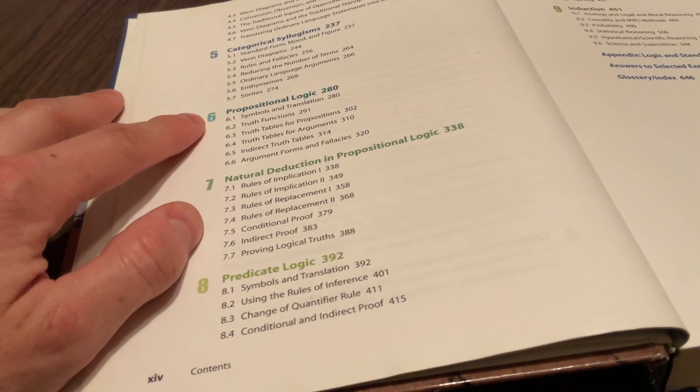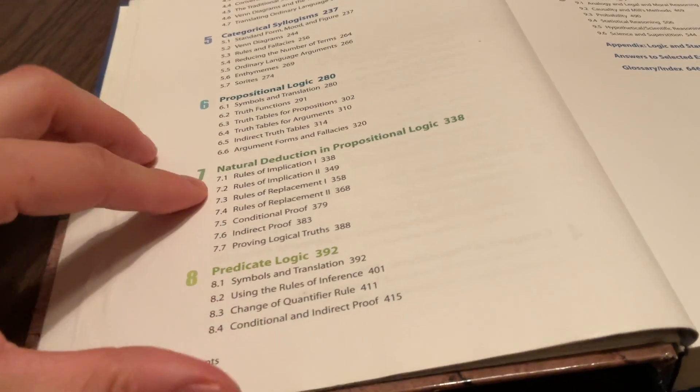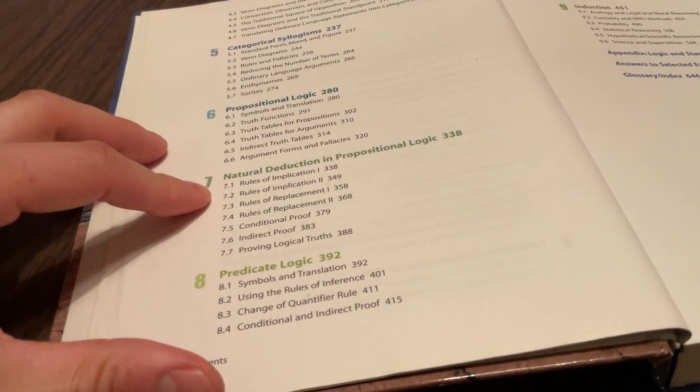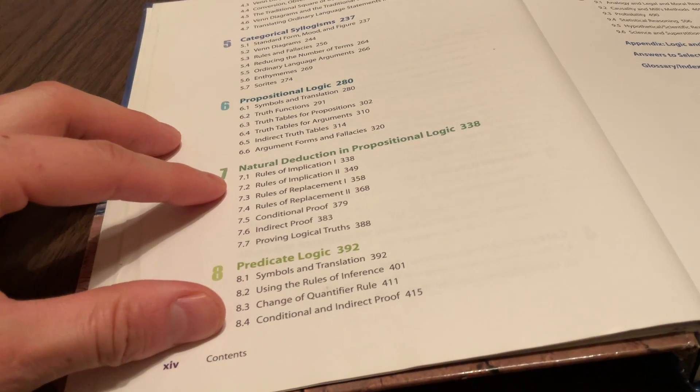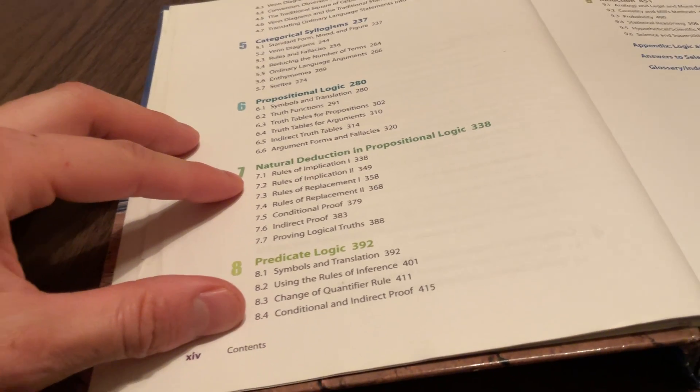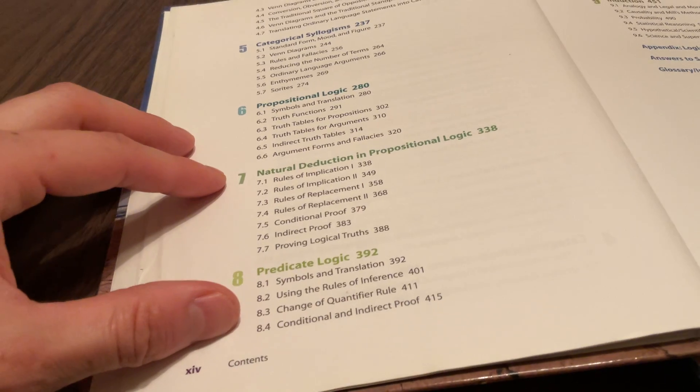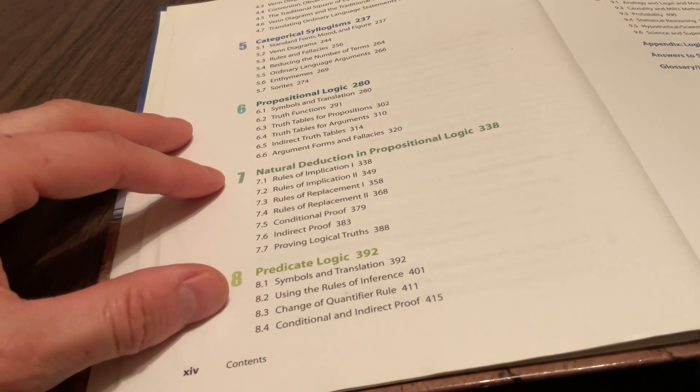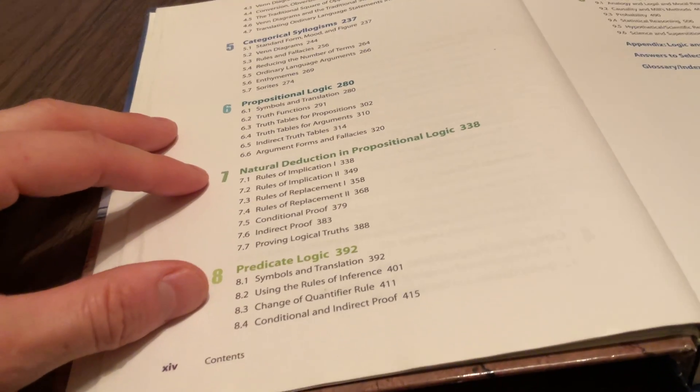Chapter six, like I said, is propositional logic, and then natural deduction in propositional logic—the various rules of implication and replacement. Things like modus ponens, modus tollens, constructive dilemmas, all that good stuff.